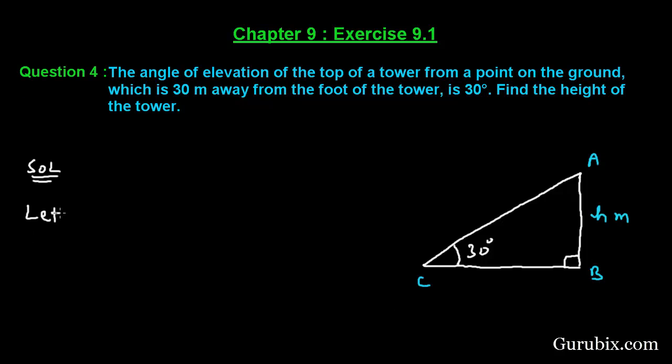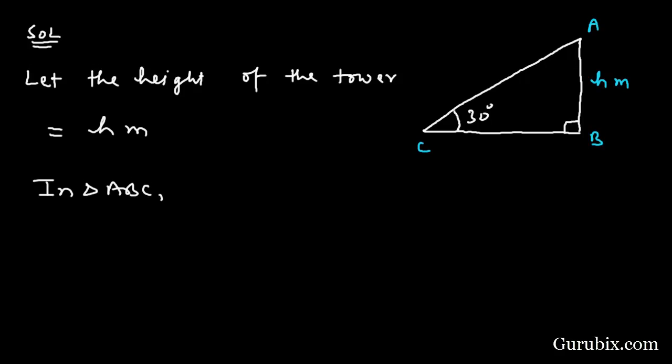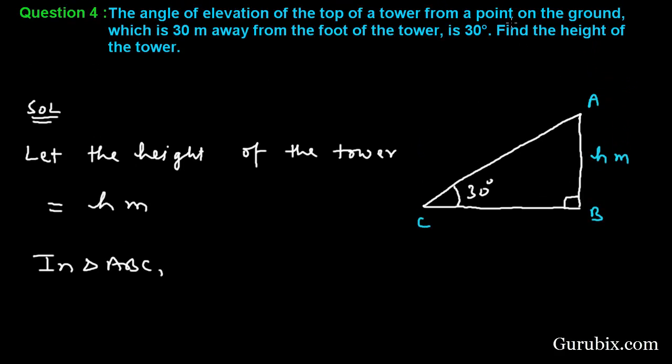So we shall write here, let the height of the tower be equal to h meters. Now we shall move to the triangle ABC. We are also given that the point is 30 meters away from the foot of the tower, so this is 30 meters.